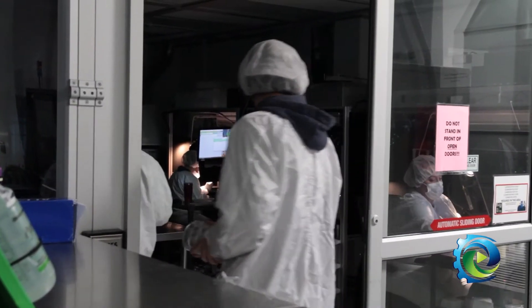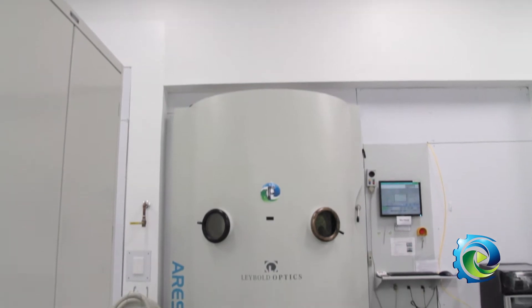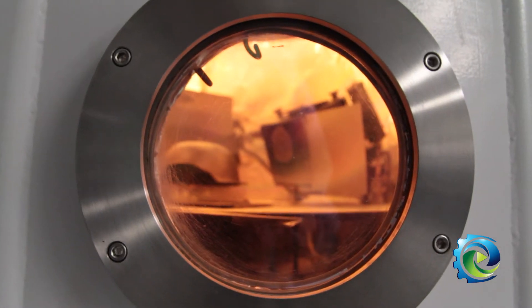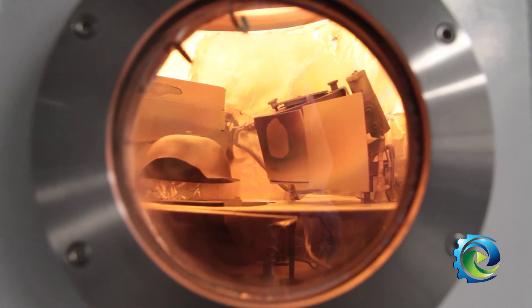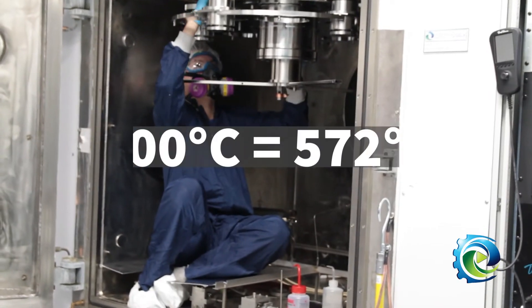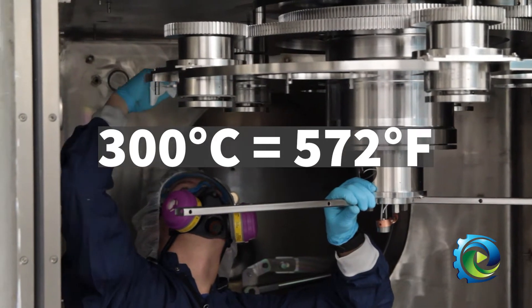How we coat an optic: we have coating chambers that are specialized, huge machines in the department. We have the optics inside, we pump down the chamber to really low pressures, and we heat up the chamber. Internally you're looking at about 300 degrees Celsius, so incredibly hot.